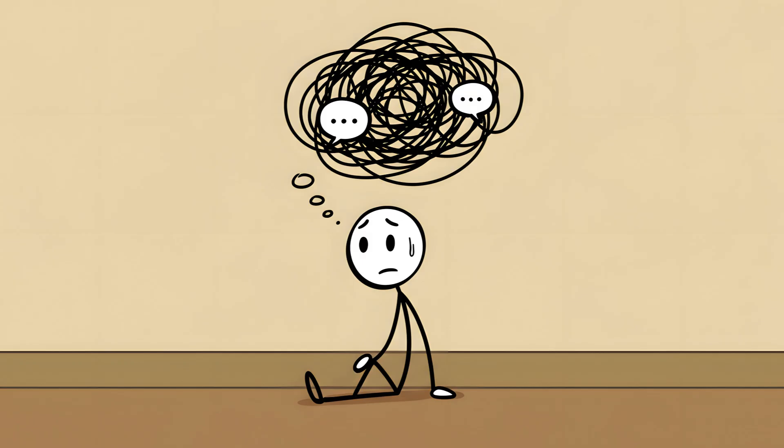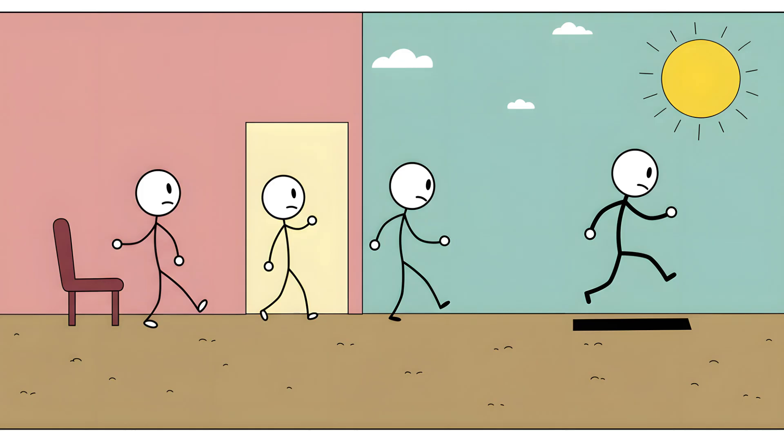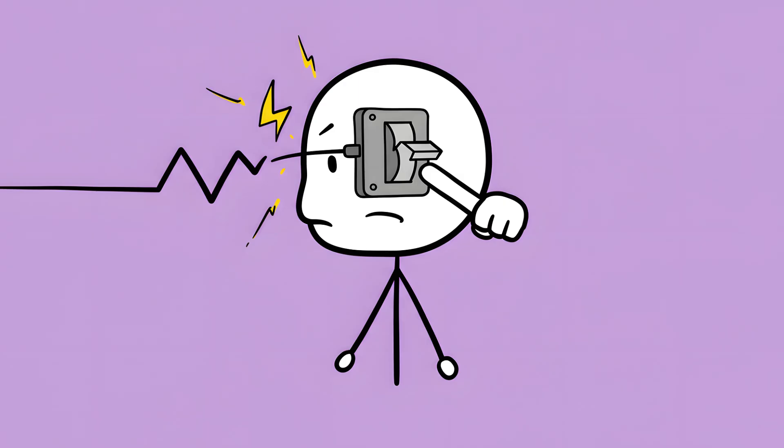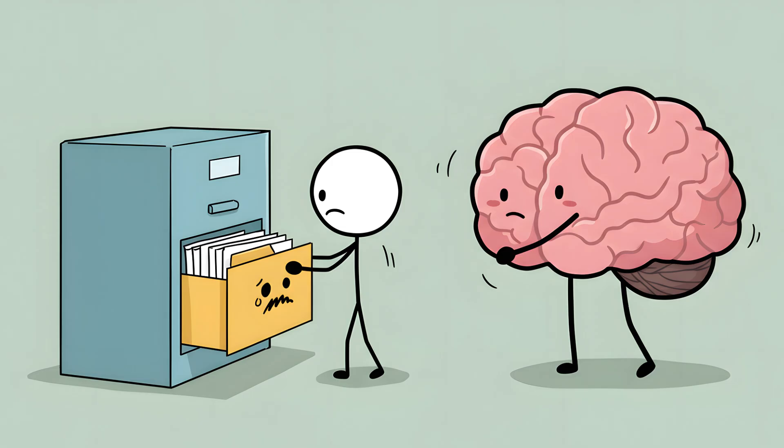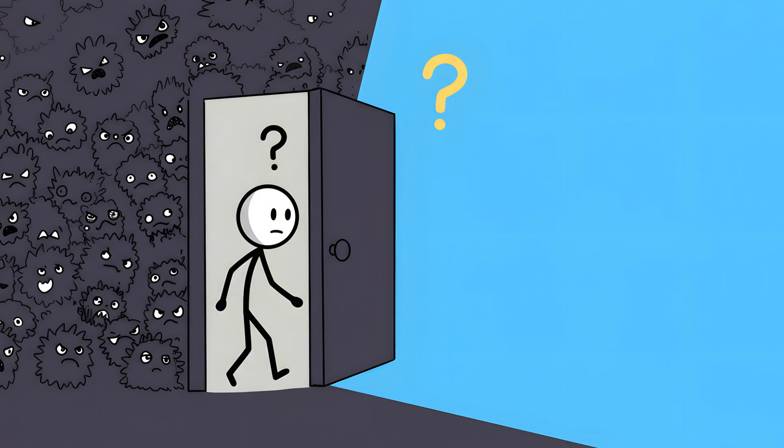You can use this principle as a Jedi mind trick on yourself. Are you stuck in a loop of angry or anxious thoughts, replaying a conversation over and over in your head? Get up. Physically leave the room you're in. Go for a walk outside. Cross a threshold. Force an event boundary. It won't solve your problems, but it can provide a momentary circuit breaker. It gives your brain the cue it needs to file away the anxious ruminating episode and start the looking at a tree episode. You can't outrun your problems, but you can, for a few precious seconds, walk into another room and forget what they were.